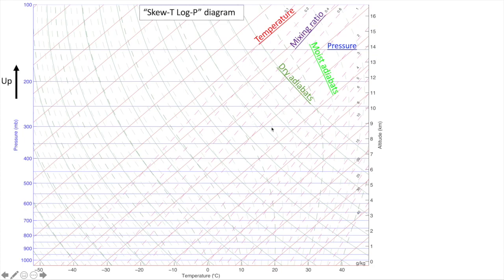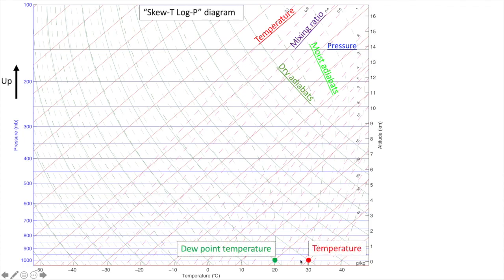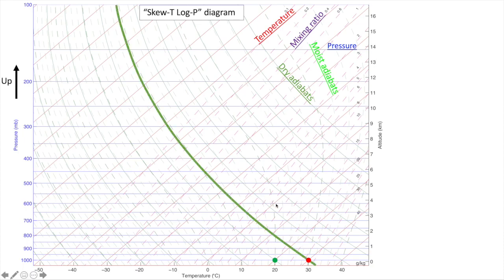Now let's look at the most common way such a diagram is used in meteorology: calculating how a parcel's temperature will change with height under a hypothetical scenario in which the parcel is lifted to the top of the diagram. To do this we need to know both the parcel's temperature at the surface as well as its dew point temperature. Since the dew point temperature is below the temperature, we know that the parcel is starting off subsaturated, meaning that if lifted it would initially follow a dry adiabat.